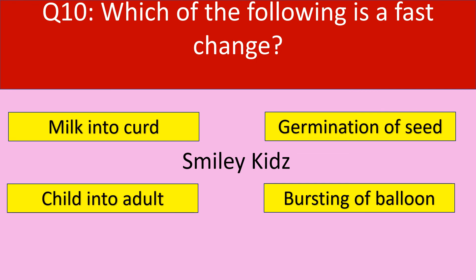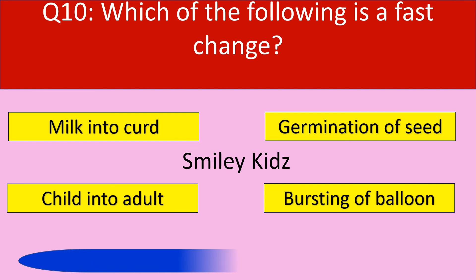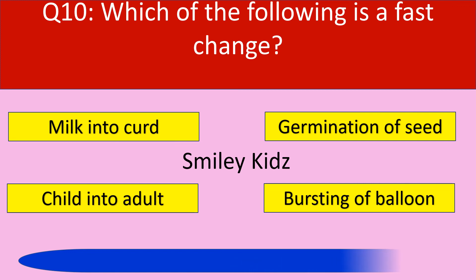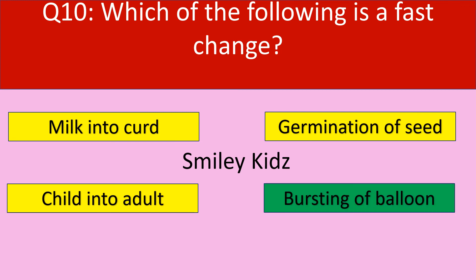The last question. Which of the following is a fast change? Options: milk into curd, germination of a seed, child into adult, bursting of balloon. Your time starts now. Your time is up and the correct answer is bursting of balloon. Bursting of balloon is a fast change.